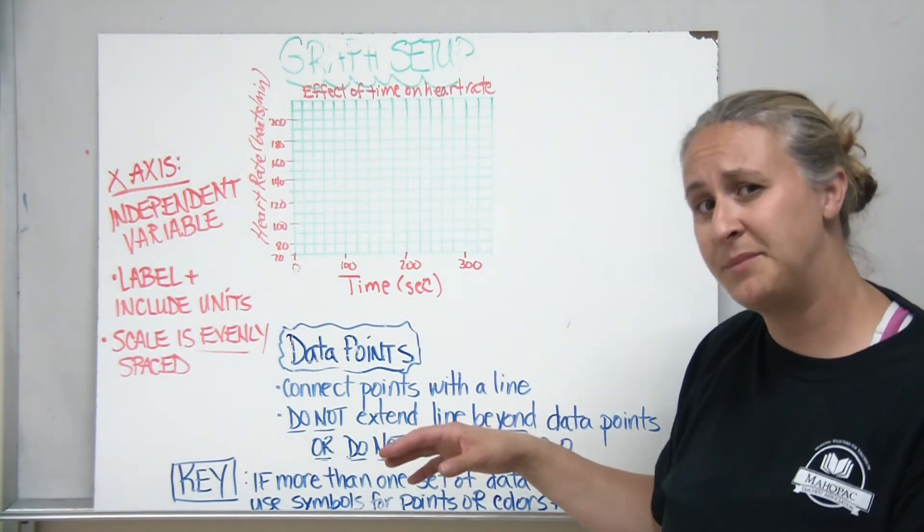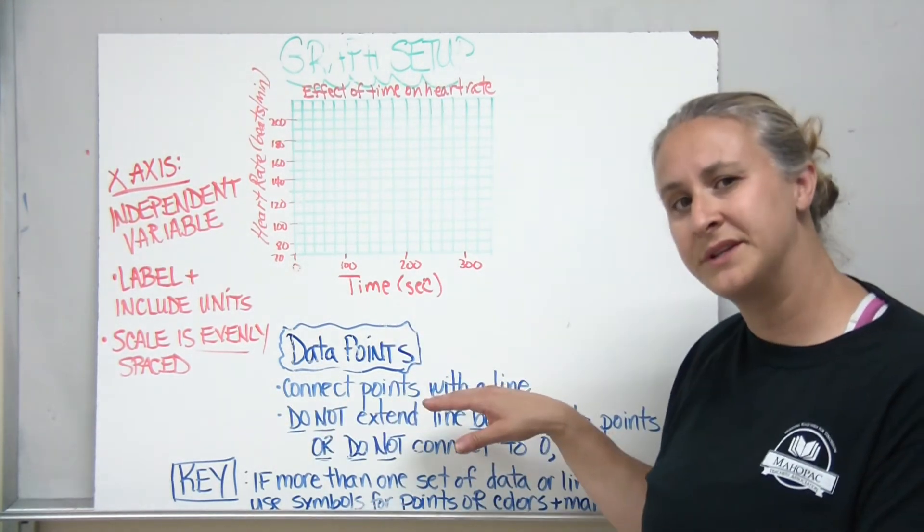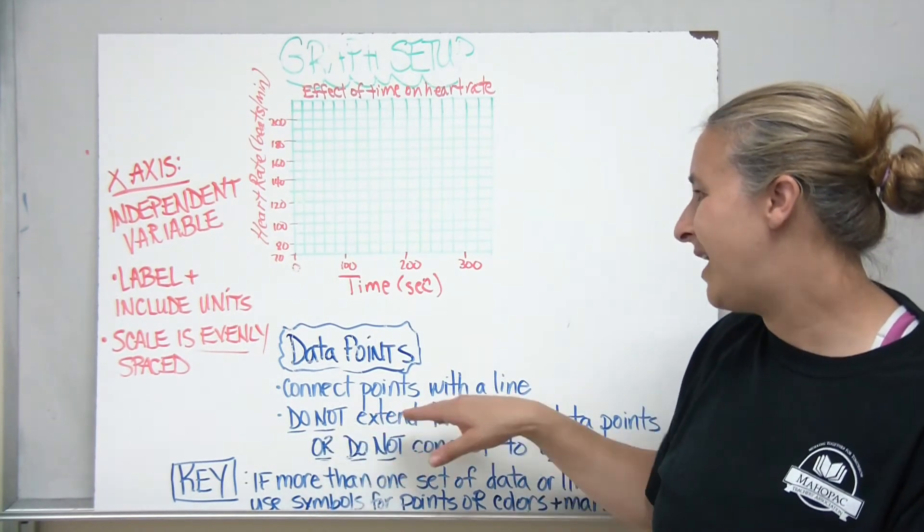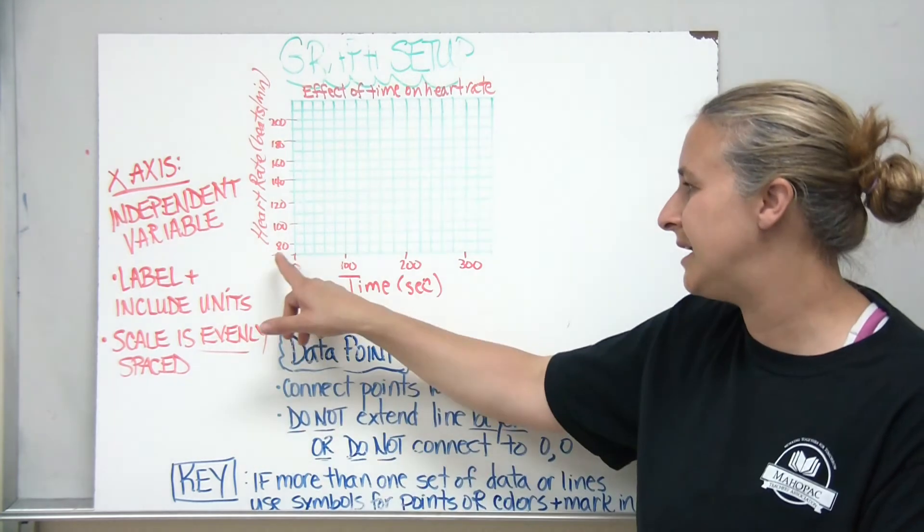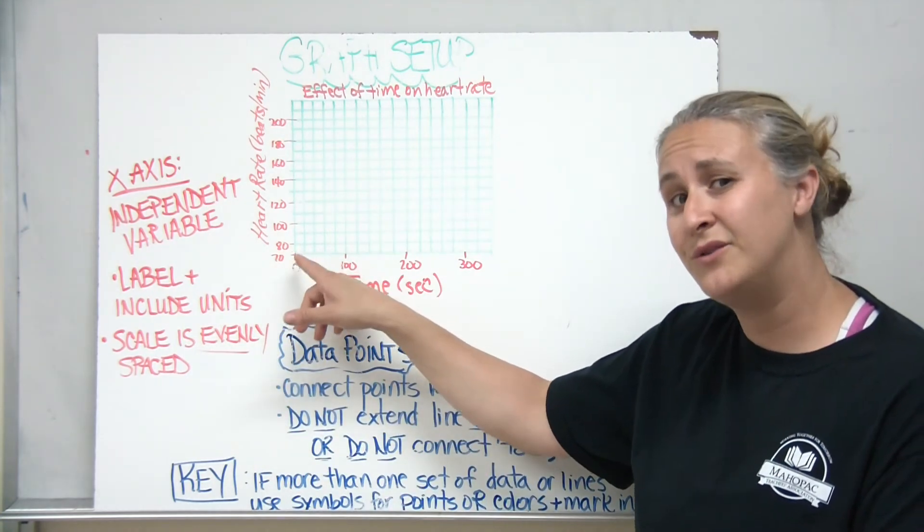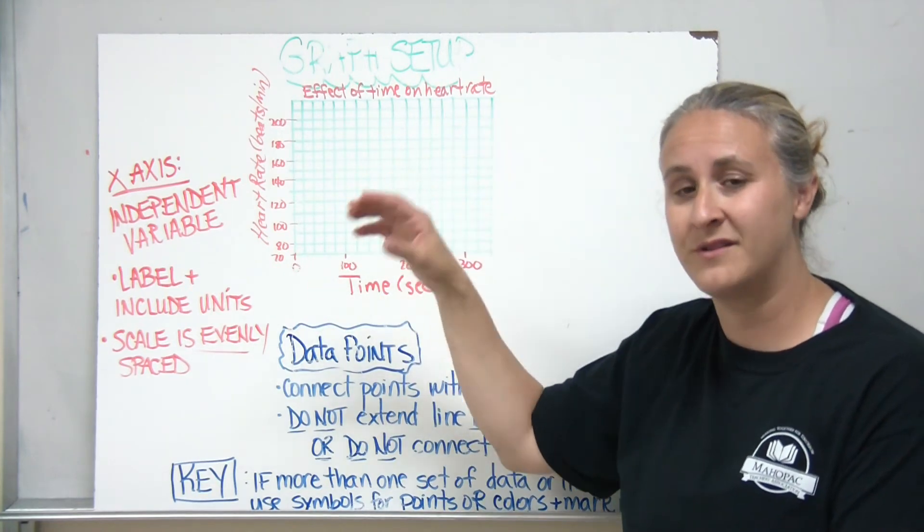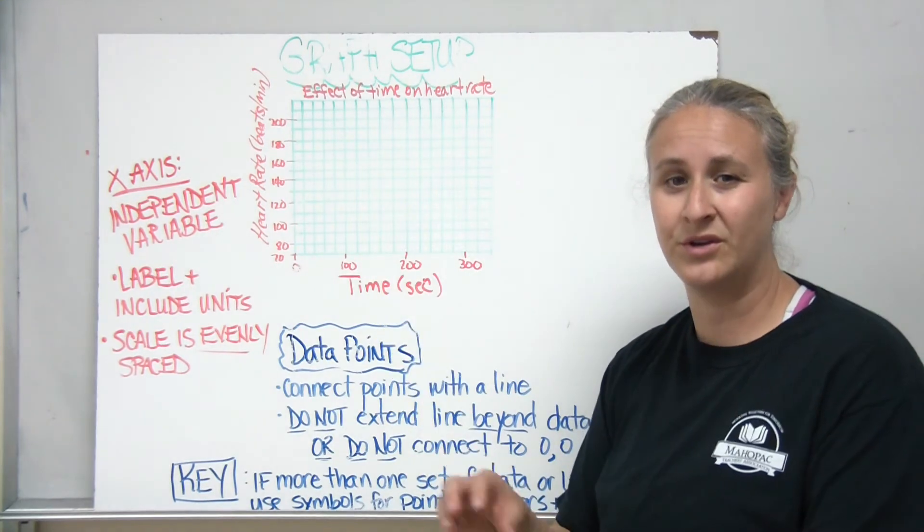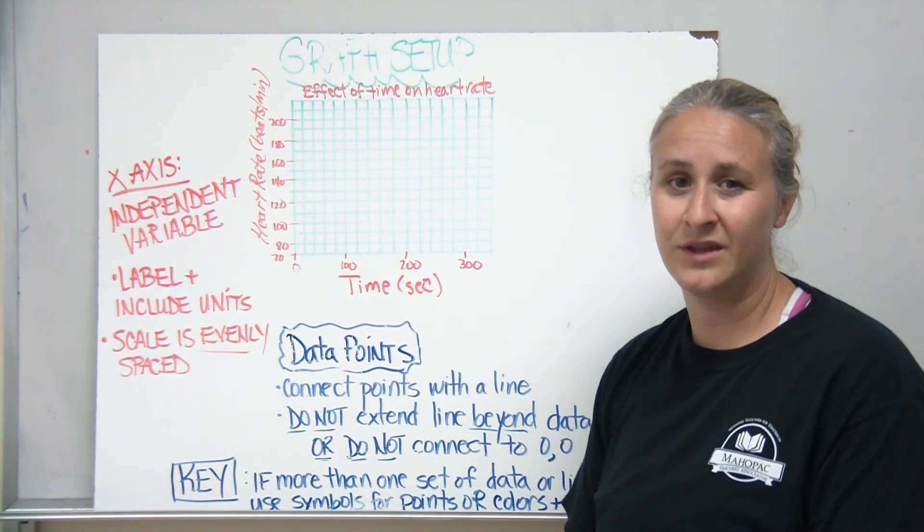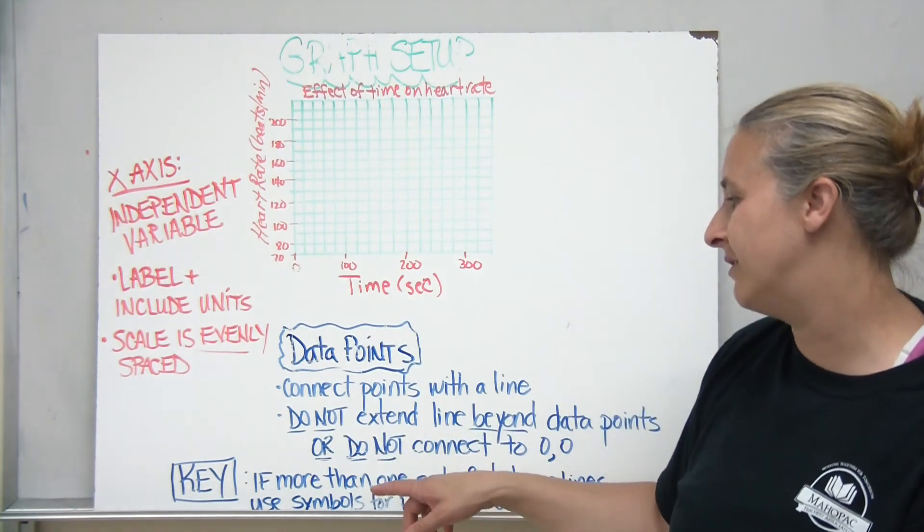Once you get your data, a couple of tips for graphing your data points. You can connect the points with a line. You do not extend the line beyond the data points and you do not connect the data point back to zero if you don't have a data point that starts at zero. Only plot the data that you have collected. In our case, we don't like to extend the line. That would be called extrapolating. You don't do that unless you're asked to do that. Just plot the line for the data points that you've collected.